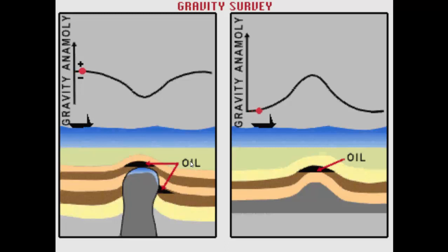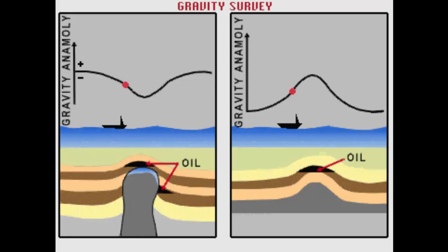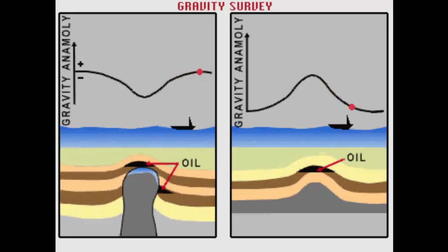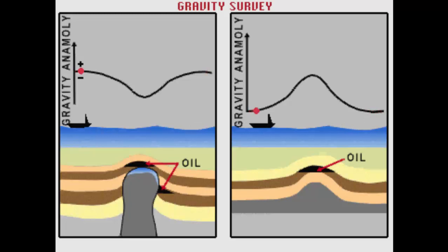A gravity survey involves the precise measurement of the gravitational pull, G, at close stations along the track using a very sensitive instrument called the gravimeter. Positive deviations from the regional average indicate heavier rocks, whereas negative anomalies imply a relatively lighter rock.